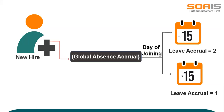We have used global absence accrual type Fast Formula for calculating the leave accrual. It benefited the organization in the sense that they were able to fulfill their promise and at the same time maintain integrity with the employees. The customer was extremely happy with the solution as it helped them in achieving their leave policy and employees were also happy to get proper leave benefits.